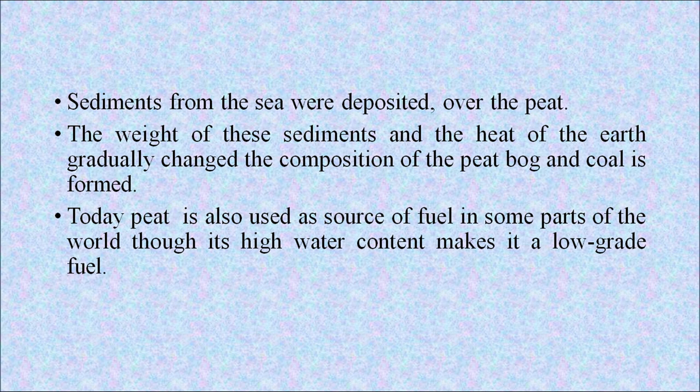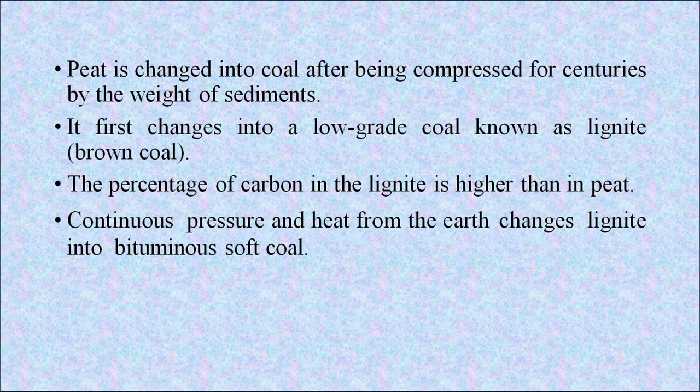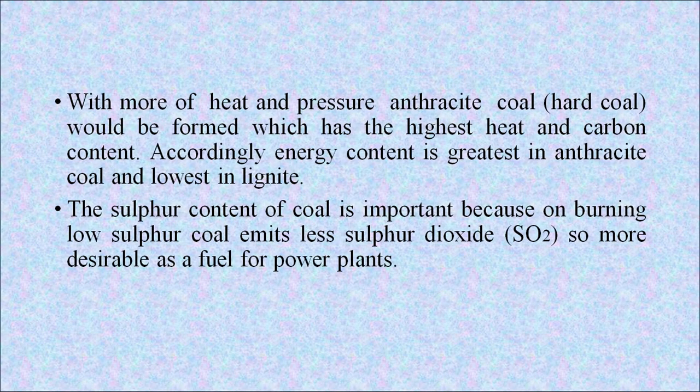Today peat is also used as a source of fuel in some parts of the world, though its high water content makes it a low-grade fuel. Peat is changed into coal after being compressed for centuries by the weight of sediments. It first changes into a low-grade coal known as lignite or brown coal. Continuous pressure and heat changes lignite into bituminous soft coal. With more heat and pressure, anthracite or hard coal is formed, which has the highest heat and carbon content. Energy content is greatest in anthracite and lowest in lignite.